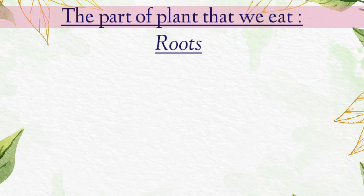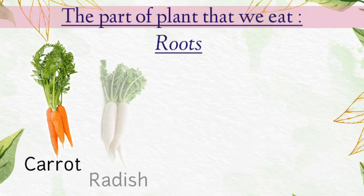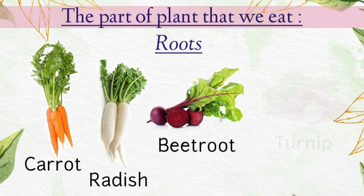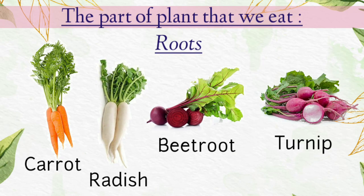Let's start with roots. You know, children, unlike roots of other plants, carrot, radish, beetroot and turnip are swollen. Why? Because these plants store their extra food in roots and we eat them as food.